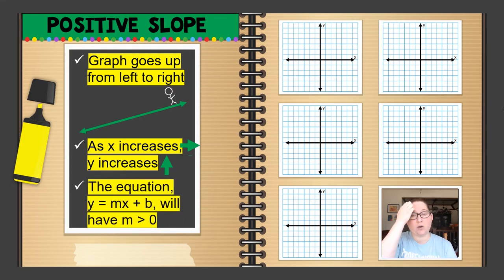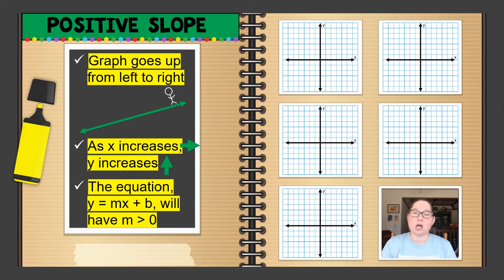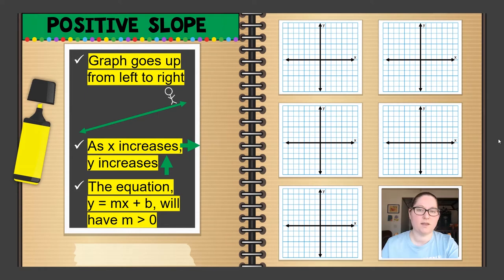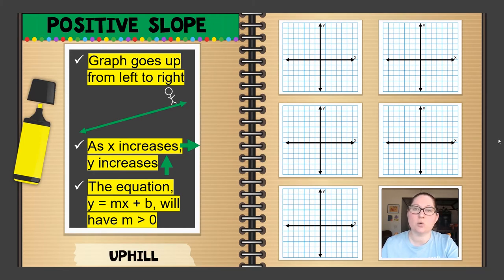There are also equations you will see later on where you have y equals mx plus b. Your slope M will be greater than zero — not equal to zero, not less than zero, but greater than zero. A common term you will hear with positive slope is uphill, meaning your graph is going uphill with a positive slope.